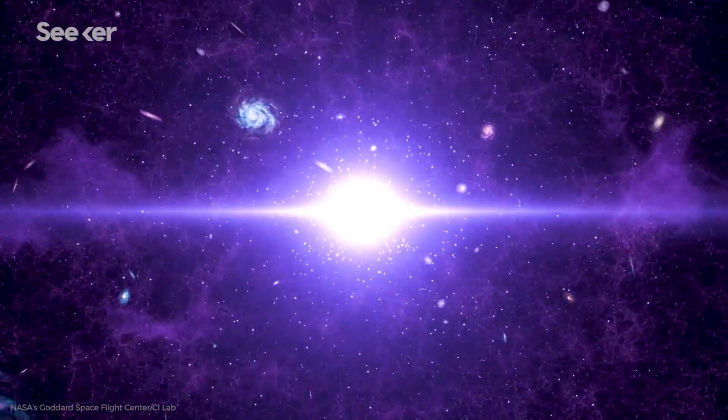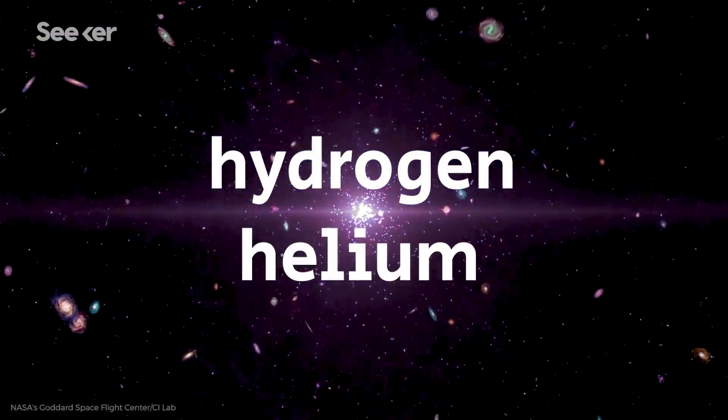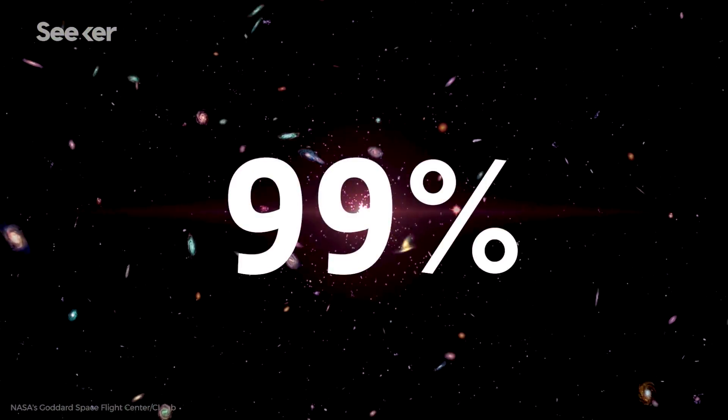But hold on, let's back up. How is it that Earth has these essential elements in the first place? Before the Big Bang, there was nothing. And then the Big Bang, and there was a lot of really hot something, mostly super-light elements like hydrogen and helium, which together make up 99% of the matter in the universe.